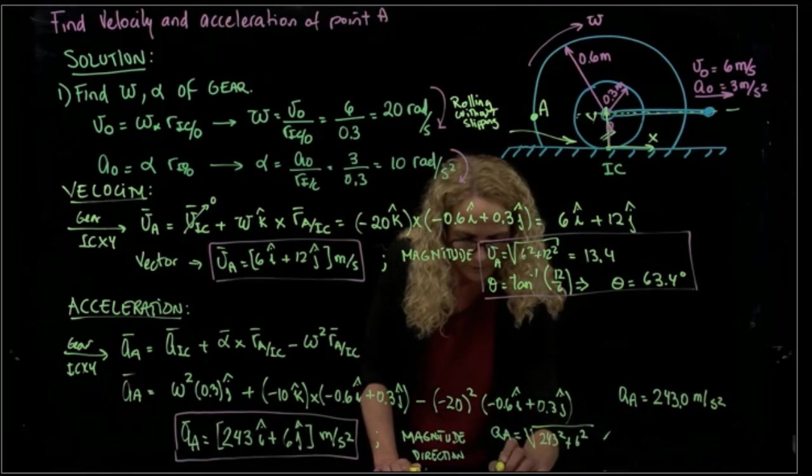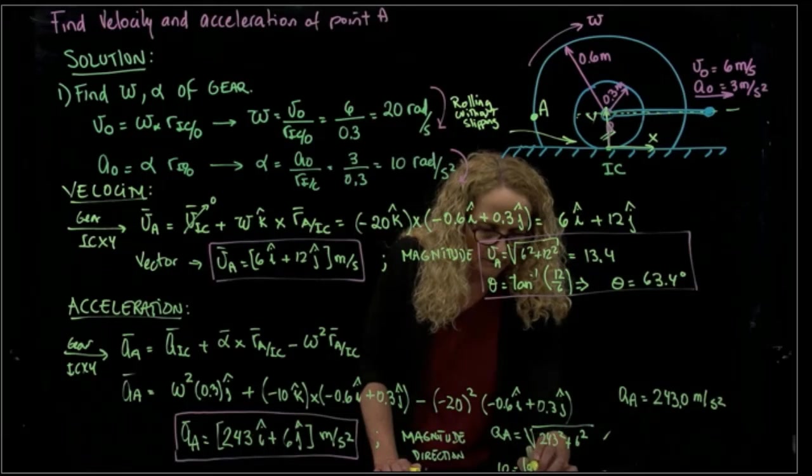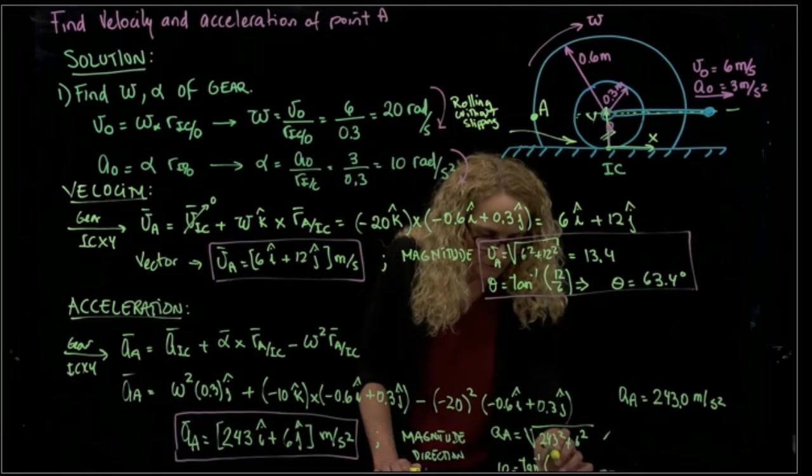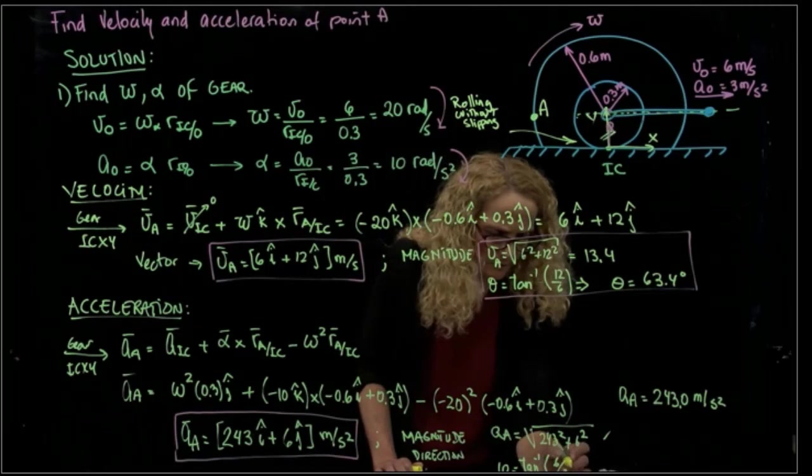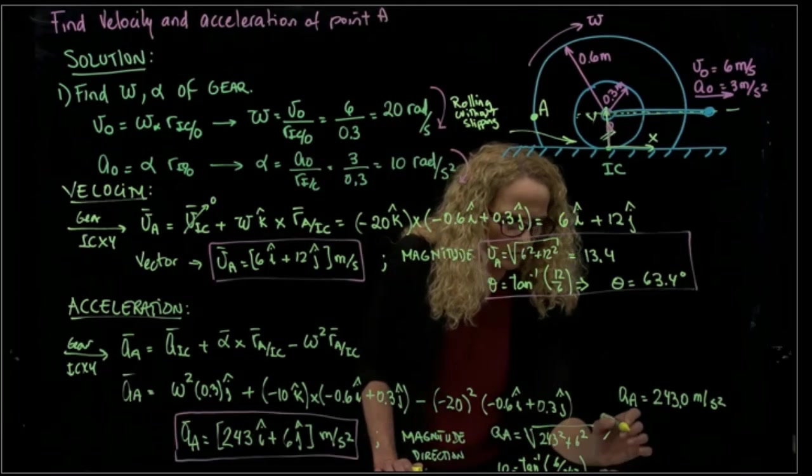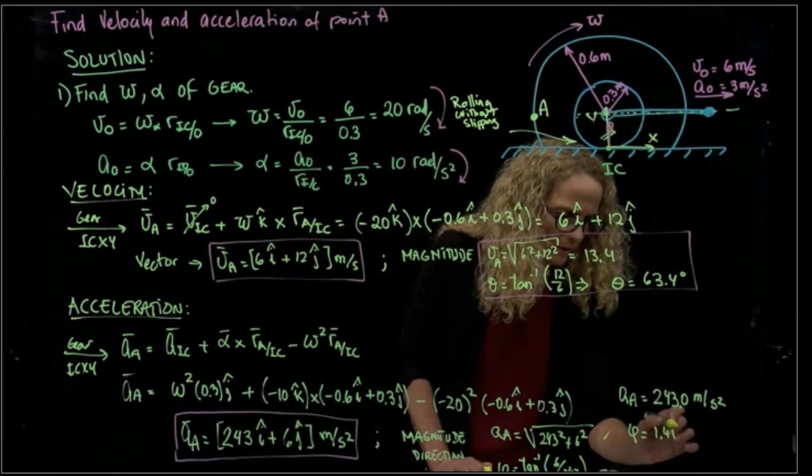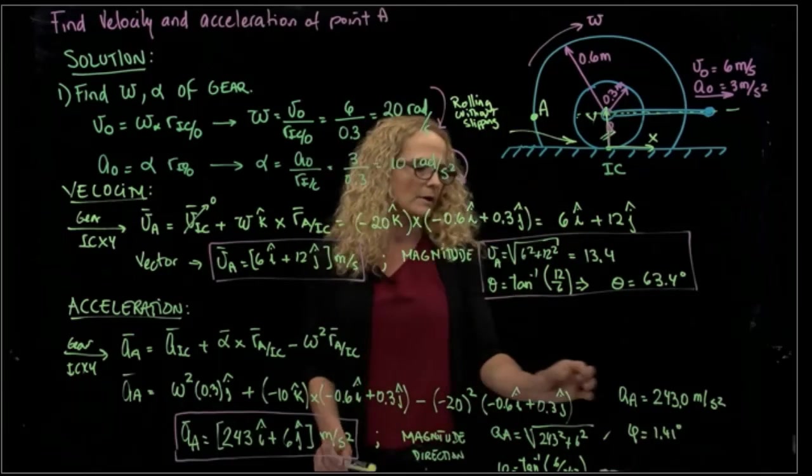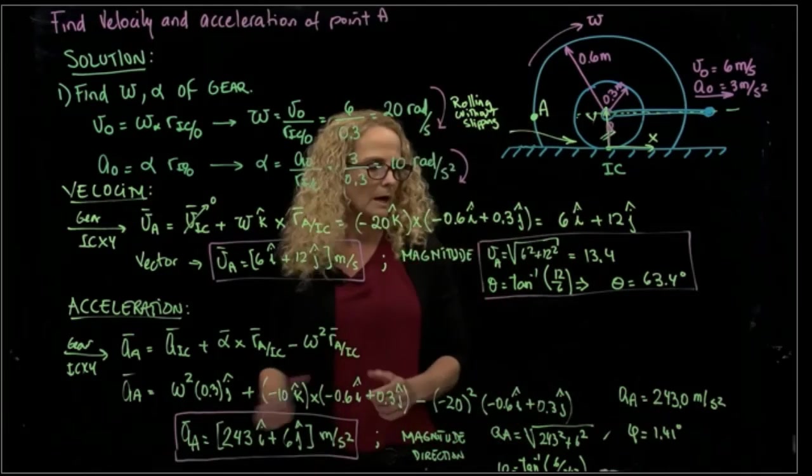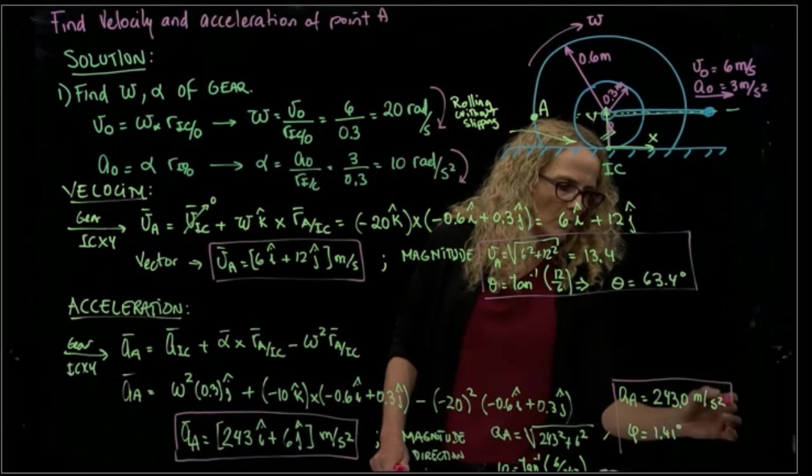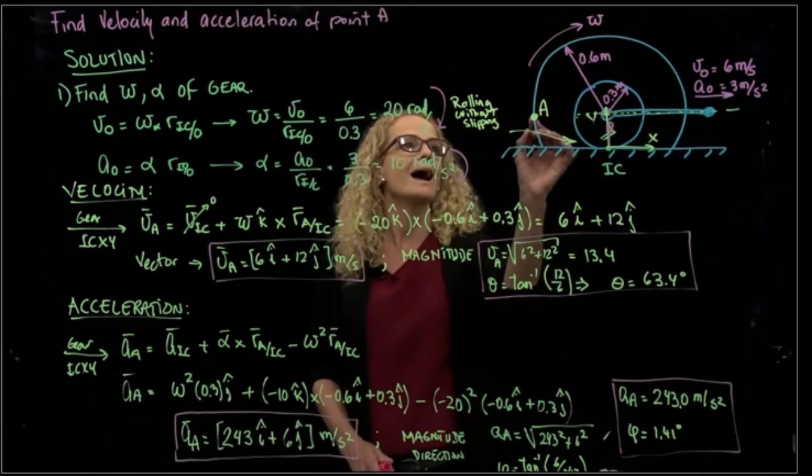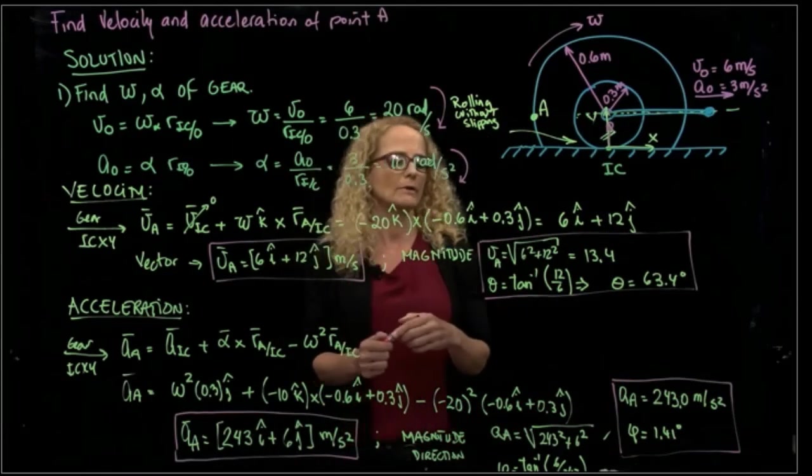And the direction, let's call it phi, is the inverse function of the tangent, 6 over 243. So the phi will be equals to 1.41 degrees. So it's a very small angle that we have for the acceleration. Most of the acceleration is in I direction.